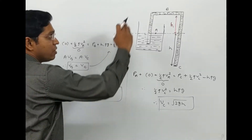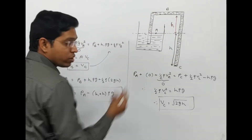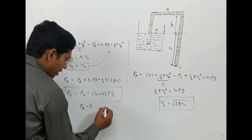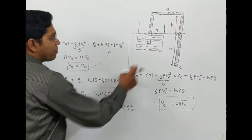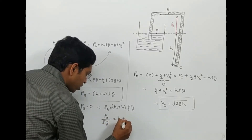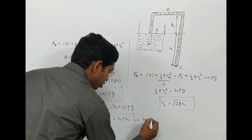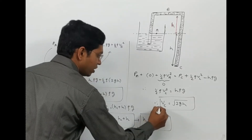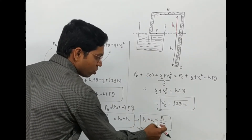If we increase h1 plus h, the pressure at B keeps decreasing. The minimum value of pressure at B is approximately zero, and below that the siphon will not work. Setting PB equal to zero gives PA equals (h1 plus h) rho g, so h1 plus h must be less than P-naught divided by rho g. This is the second required condition.